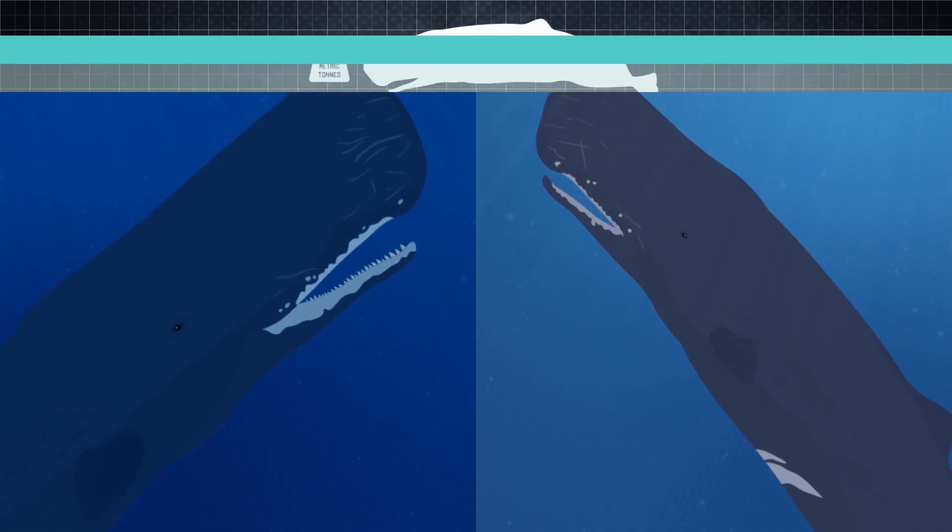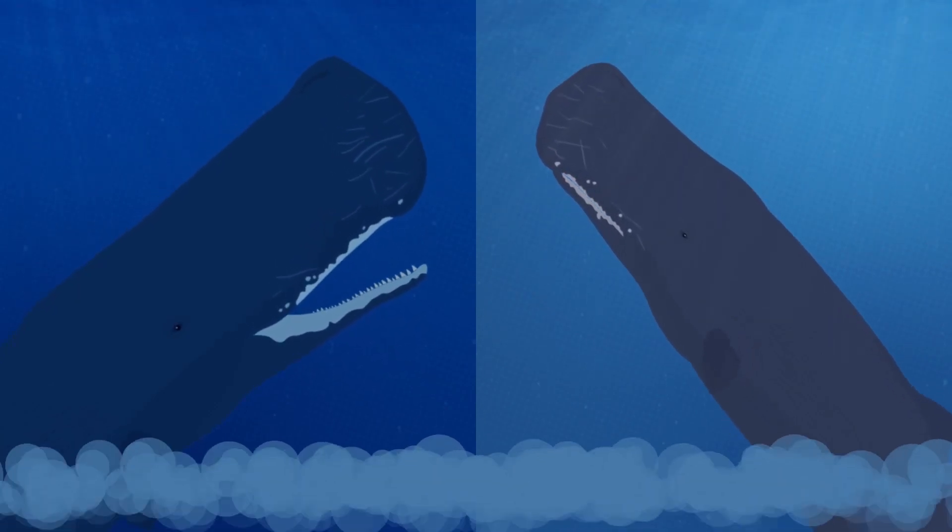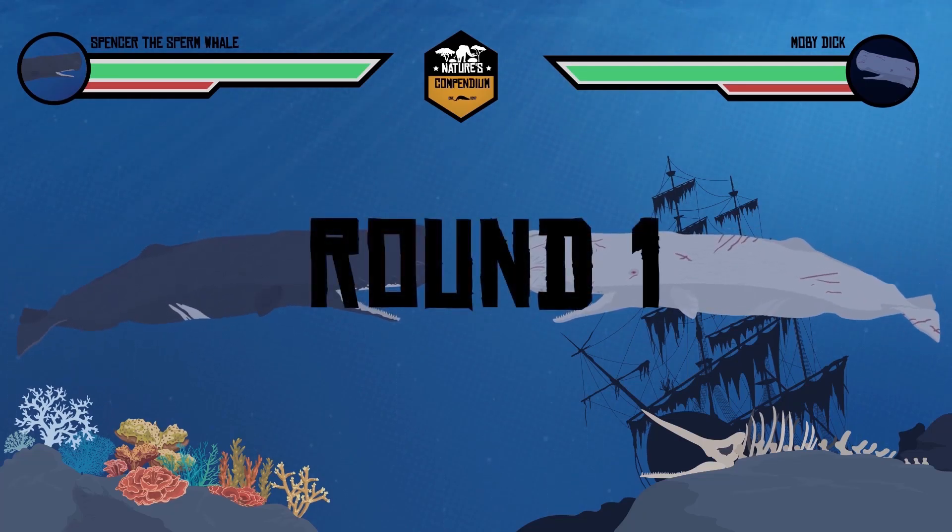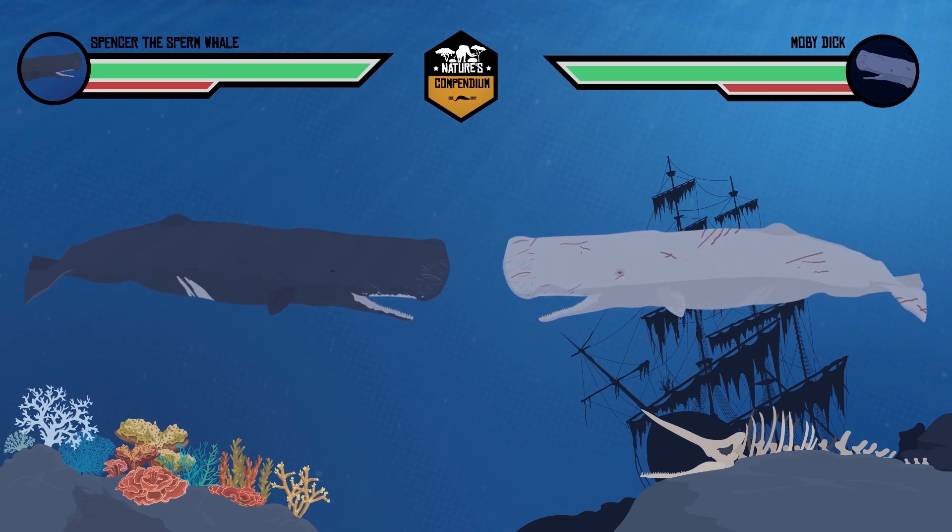In addition, male sperm whales have up to 50 teeth in their lower jaw, whereas female sperm whales tend to have fewer teeth. Some females are even toothless entirely. This is mainly because sperm whales don't need their teeth to catch prey, as they rely mainly on a form of suction feeding. Male sperm whales mainly use their teeth for intraspecific competition with other males over breeding rights.